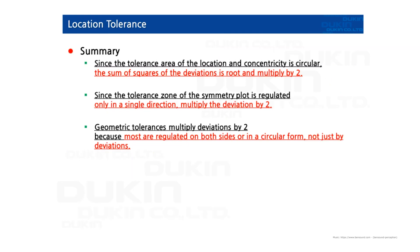Since the tolerance area of the location and concentricity is circular, the sum of square of the deviations is root and multiplied by 2. That's the formula.